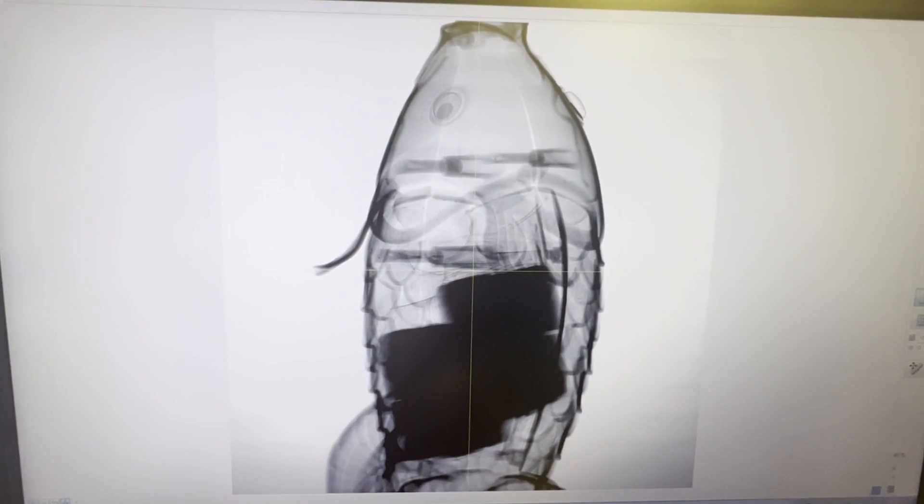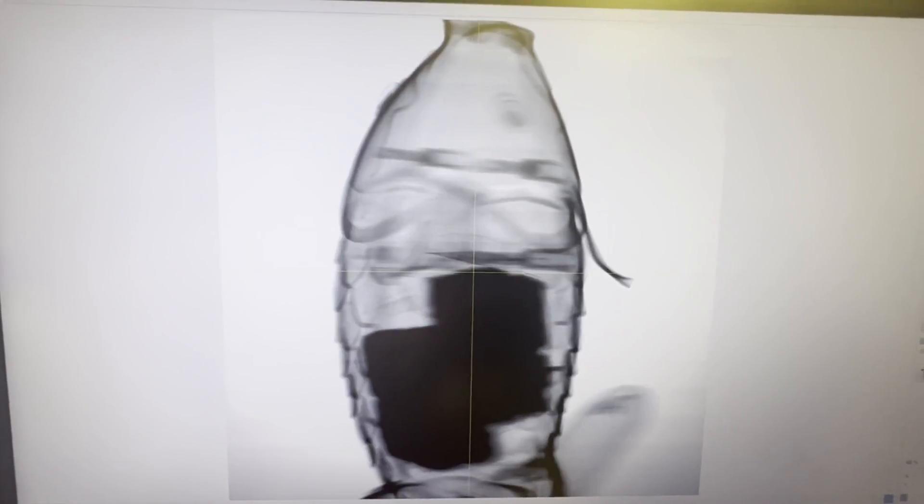And we can see right away that the fish has a few packages inside of it that are more dense than the outer fish itself. Three packages to be exact.